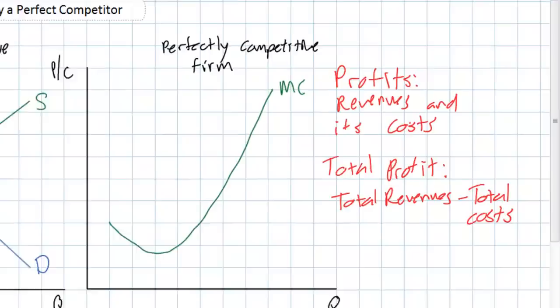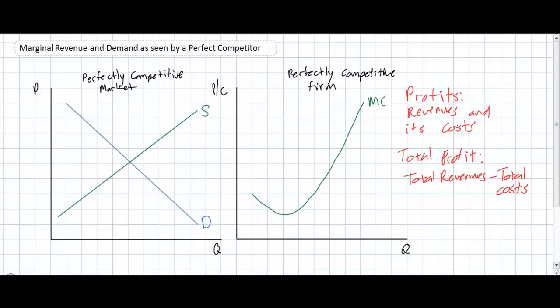In our graphs of a firm's short-run cost of production we generally don't illustrate total revenues and total costs — rather what we focus on is per unit costs and per unit revenues. In our previous lessons we've shown how a firm's per unit costs, including its marginal costs, average variable, and average total costs are determined. In this lesson we're going to focus on revenues: how is a firm's revenues determined in the short run? And we're going to start by looking at a perfectly competitive firm.